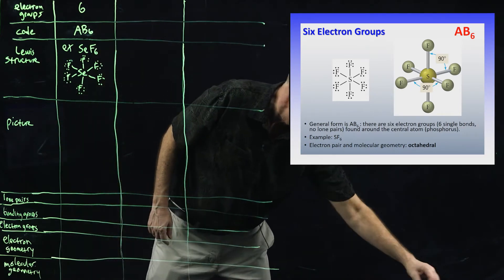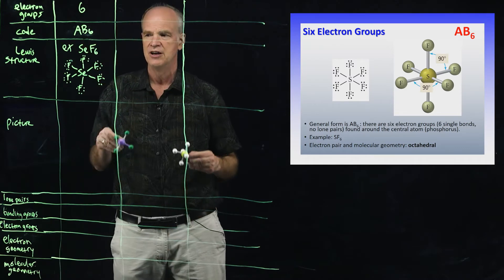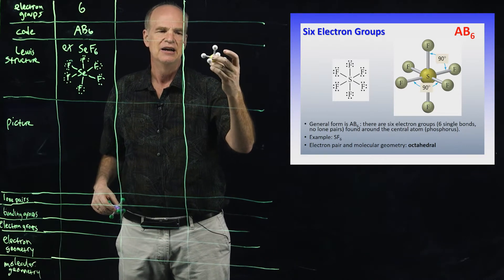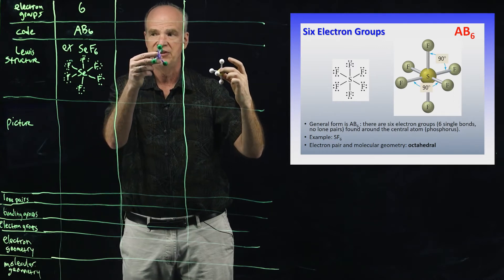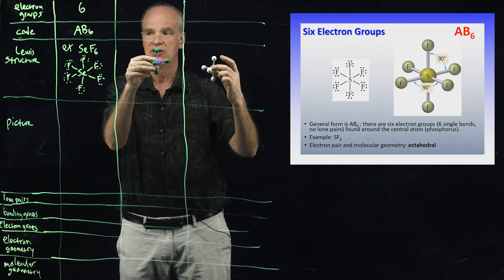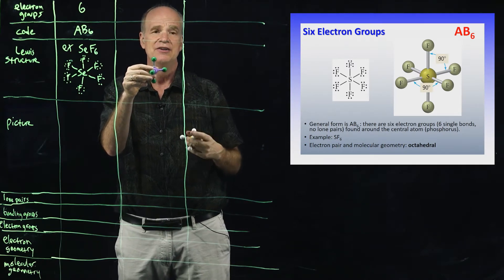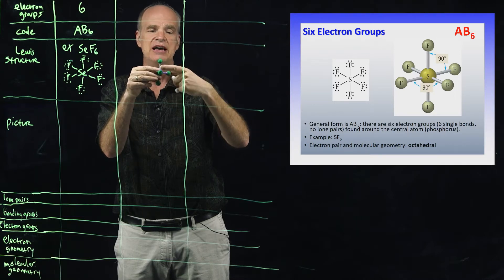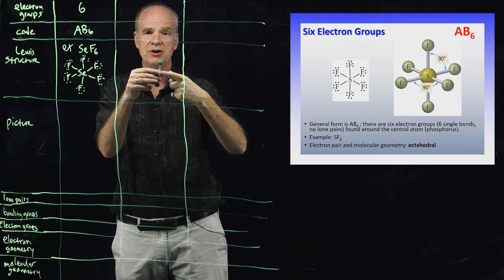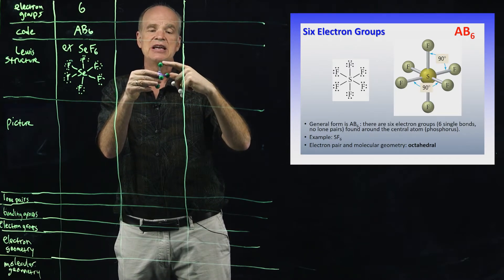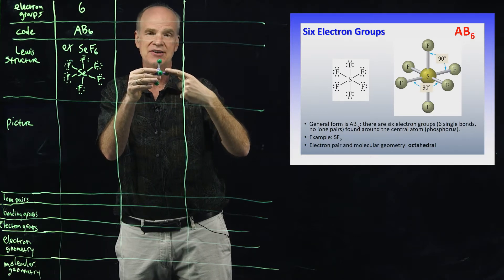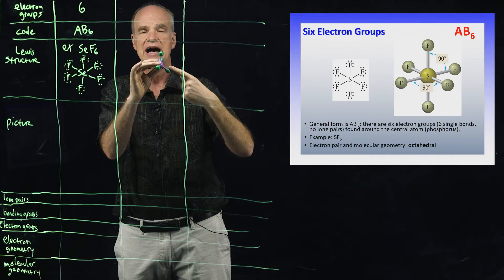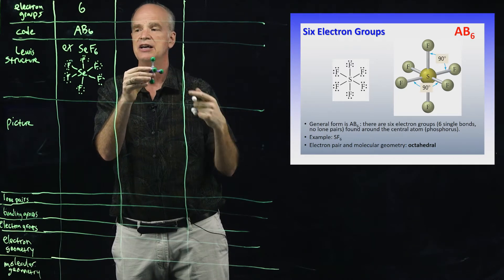I want to compare AB6 to the AB5 molecule we looked at earlier. With AB5, we could differentiate the B atoms into two classes: axial atoms and equatorial atoms. The angles between them differed — axial atoms were 90 degrees from equatorial atoms, while equatorial atoms were 120 degrees from other equatorial atoms. So there were a couple of distinct angles in that molecule.